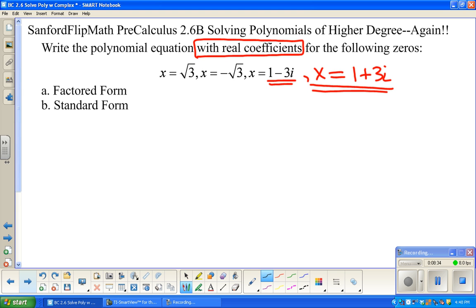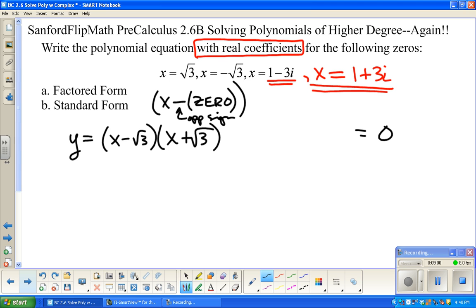So we're going to write an equation. Either y equals, or at the end you can have equal zero, whichever. The factor always follows the same pattern, x minus whatever the zero is. This is that idea of opposite sign here. So it's going to be x minus square root of 3, x minus a negative square root of 3, x minus 1 minus 3i. Now, if you want to use brackets instead here, you're certainly welcome to. I'm not going to. 1 plus 3i. I'm sure some math person out there is going to think I'm a math dropout for not using brackets, but that's okay.